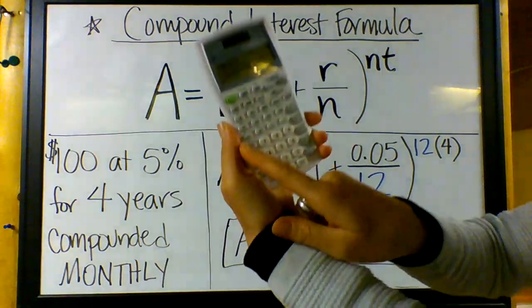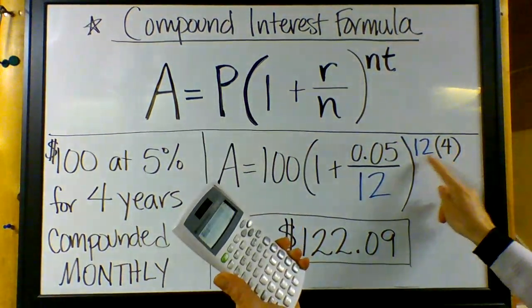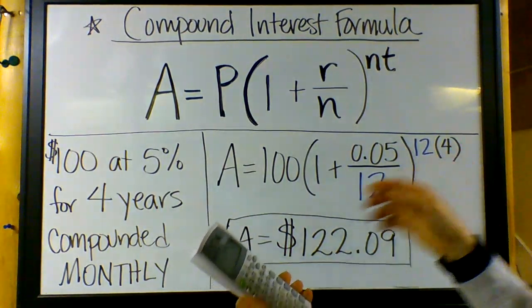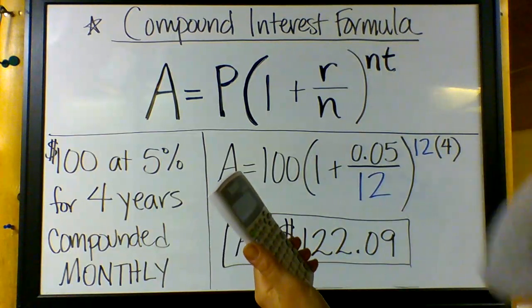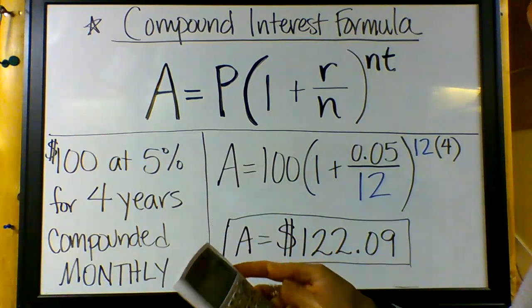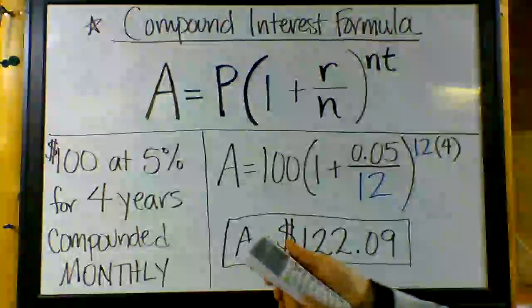Now we want to do the little caret, remember your little caret there, to the... and I can do this in my head: 12 times 4 is 48, so to the 48th power equals. I have 1.220895355.